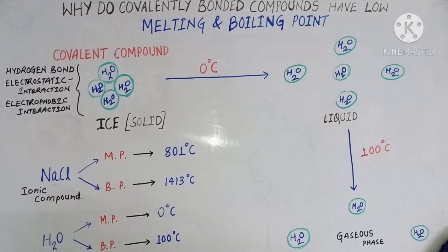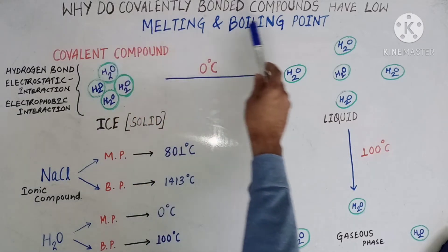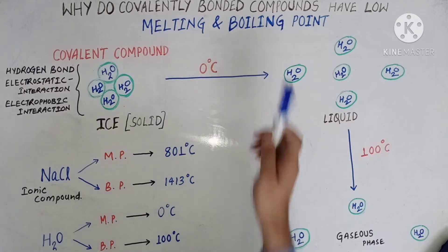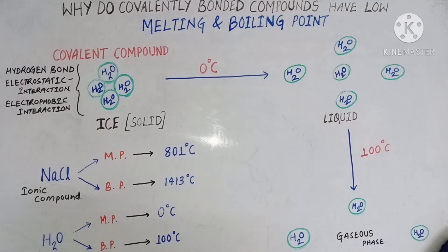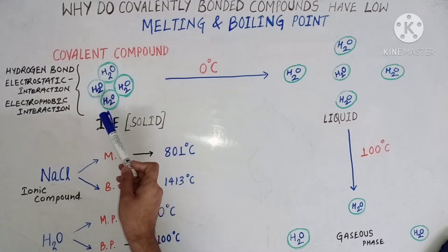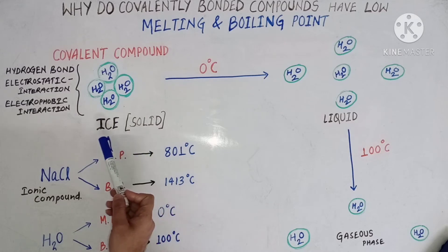Welcome back. Today in this session we will try to find out the answer to this question: why do covalently bonded compounds have low melting and boiling points? To answer this question, first we need to understand what melting and boiling are. Melting and boiling are two processes in which a molecule transforms from one state to another. To understand this, let's take an example of a covalent compound — a water molecule present in its solid state, that is, ice.